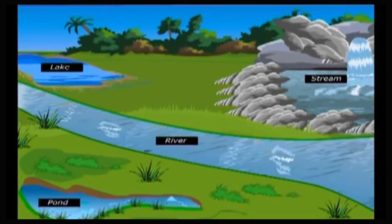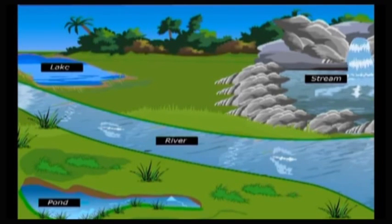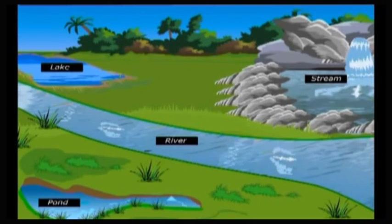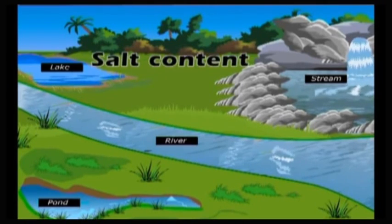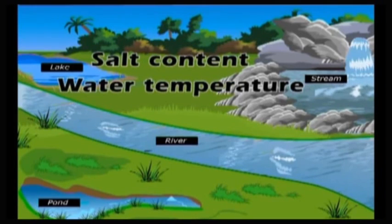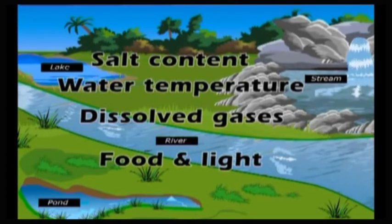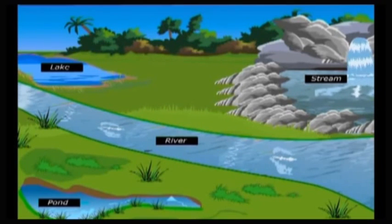Fresh water habitat includes rivers, streams, lakes and ponds. Water flows continuously in rivers and streams, while water is stagnant and never flows in lakes and ponds. As a result, living conditions in rivers are different from those of lakes and ponds. Salt content, water temperature, dissolved gases, availability of food and light are the factors that influence the life of the organisms in these two aquatic habitats.